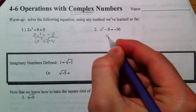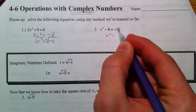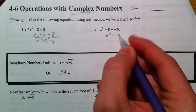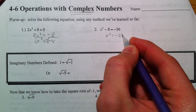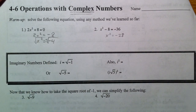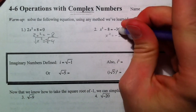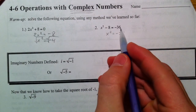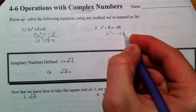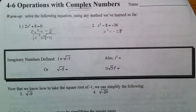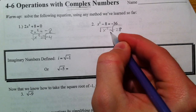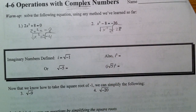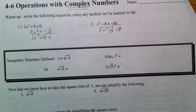Same thing with this one. If you add 8 to the other side, x² equals negative 28. And same thing — you'd say plus or minus the square root of negative 28, and you'd have to stop there. Because you can't take the square root of a negative — until now.